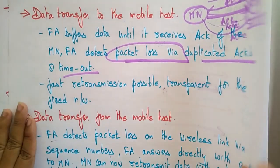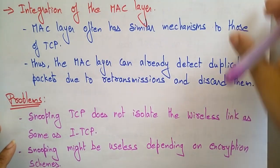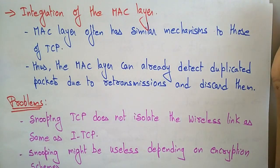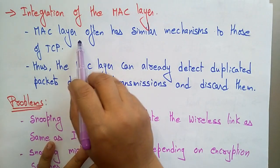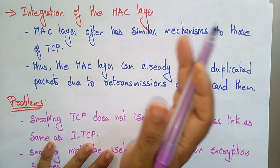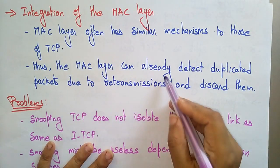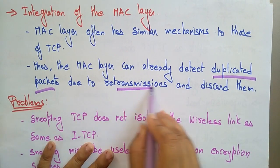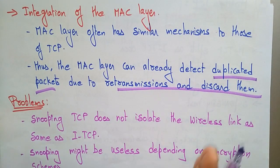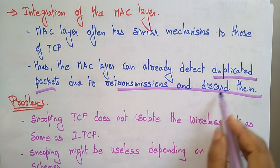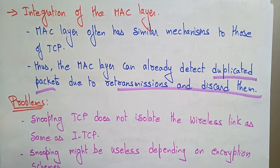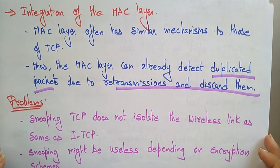Another aspect is the integration of the MAC layer. The MAC layer often has similar mechanisms to those of TCP, so the MAC layer can already detect duplicate packets due to retransmissions of the same sequence number and discard them. This packet-discarding role is performed by the MAC layer between the mobile node and the foreign agent.